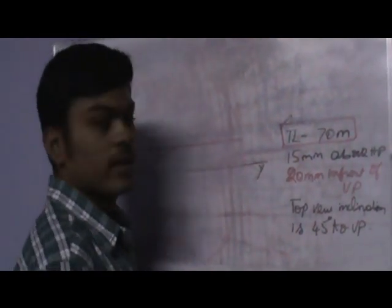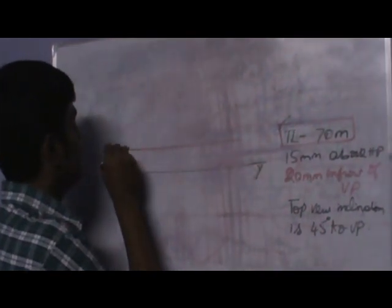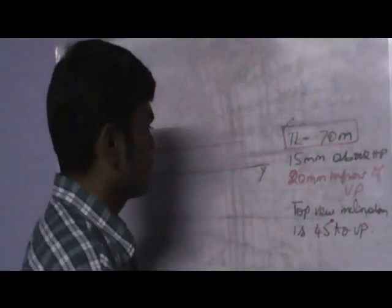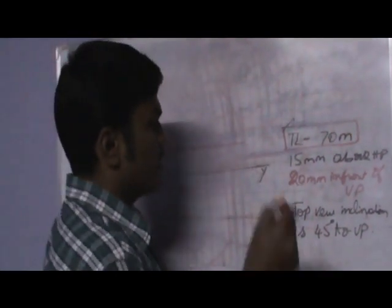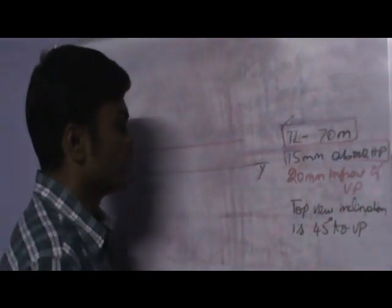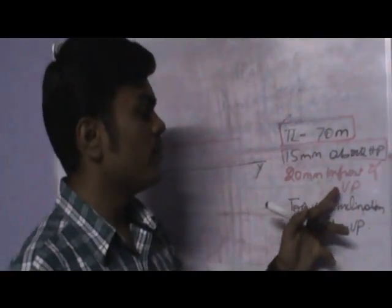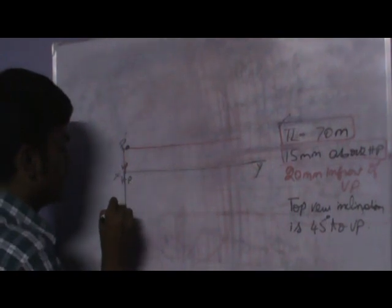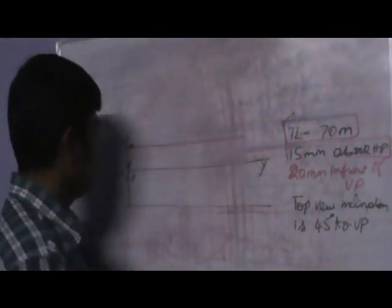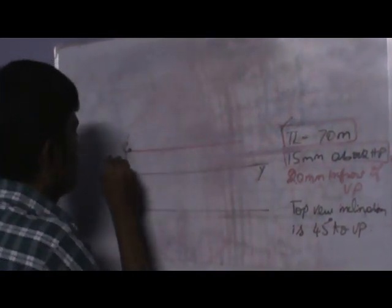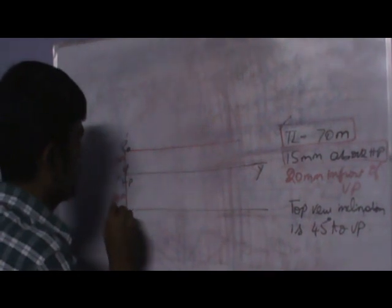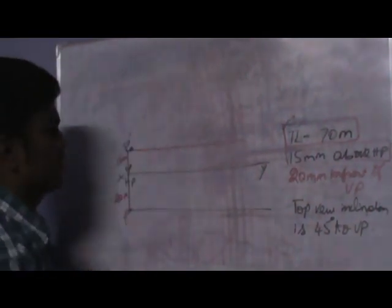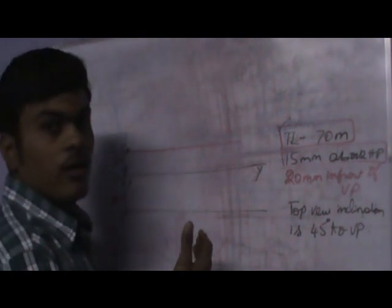The next clue: 20 mm in front of VP. Since it is in front of VP, its projection is on HP. This distance is 20 mm and 15 mm respectively. I have taken this point as P, where the line starts from. This is P' in the front view, and P is the top view. We are very familiar with this setup.